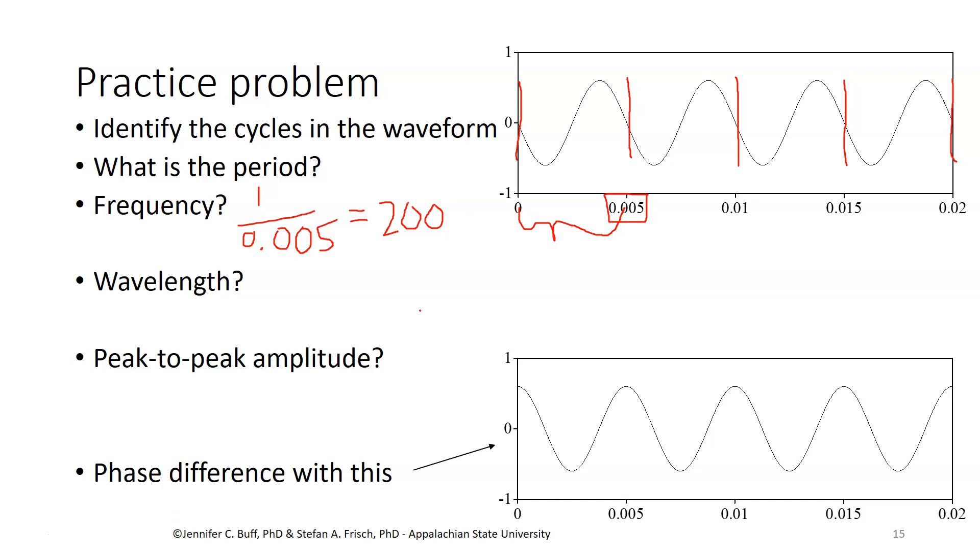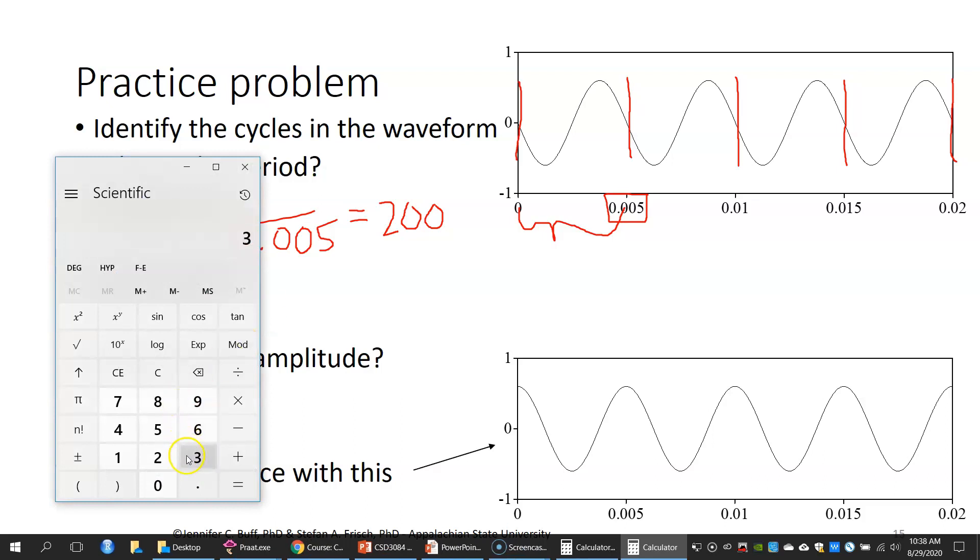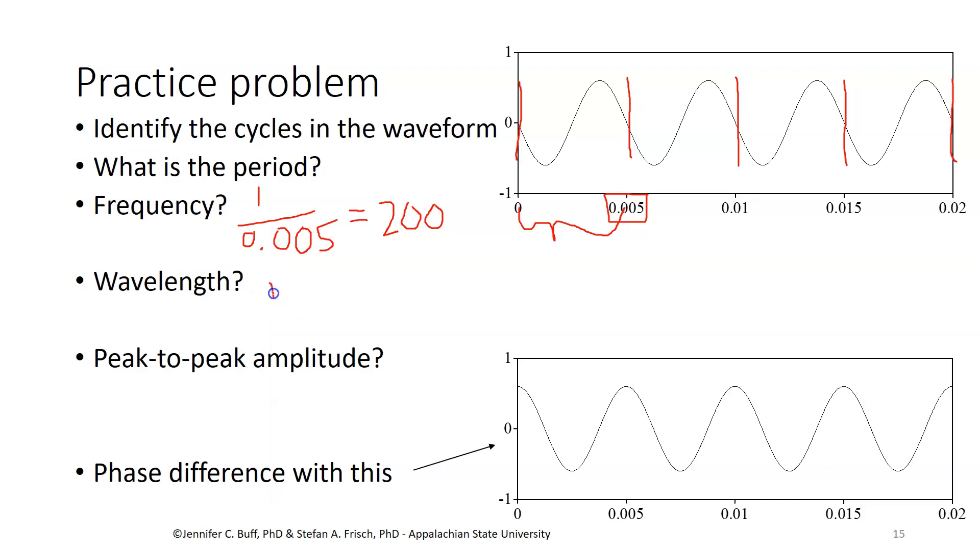We know the frequency, 200 Hz. We can use that to compute the wavelength. The wavelength is speed of sound, which is 34,400, divided by the frequency, which is 200. So that gives us 172, and in this case centimeters, because our speed of sound was in centimeters.